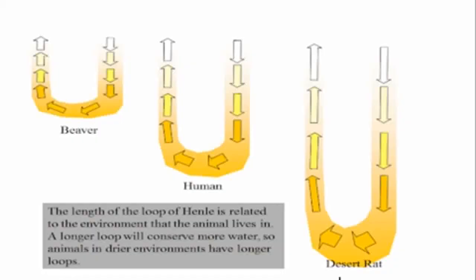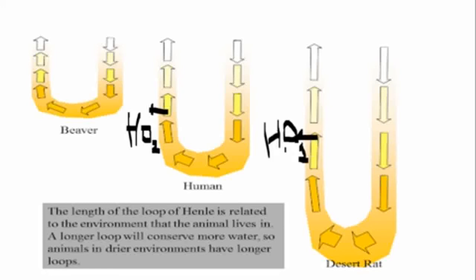In the nephron, we have seen the descending limb. The beaver is also a rodent. Humans have a loop of Henle — a U-shaped structure with a descending limb from which water is reabsorbed. The length of the loop of Henle is related to the environment. Animals in a drier environment have longer loops of Henle in their nephrons, so that more water is reabsorbed into the body.